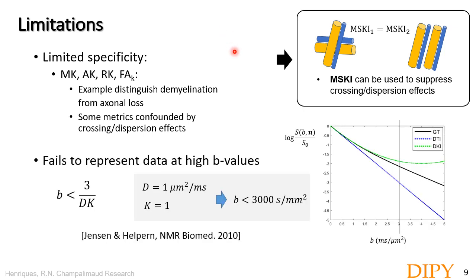Another very important limitation is that kurtosis is only adequate to represent signals up to a certain B value. Since DKI assumes only a second-order deviation of the log signal decay, it cannot well represent the non-Gaussian decays in real tissue at high B values. In fact, DKI predictions at high B values predict an increase in signal, which is not observed in real high B-value tissue acquisitions. Therefore, it is very important to adjust your B values for this technique. You can use the available expression to fine-tune your B value according to expected diffusion and kurtosis values. For typical in vivo diffusivities and a kurtosis of one, you should not use B values much higher than 3000.